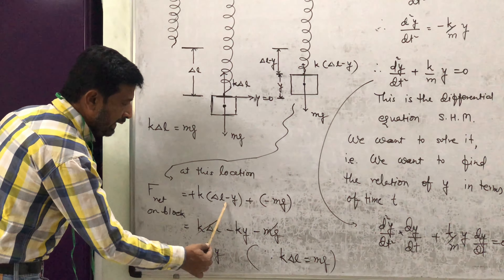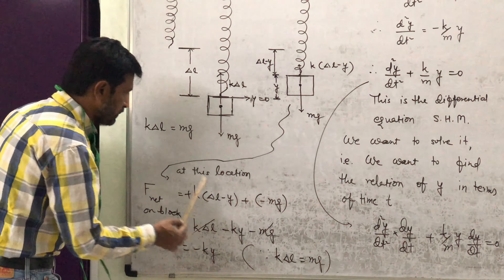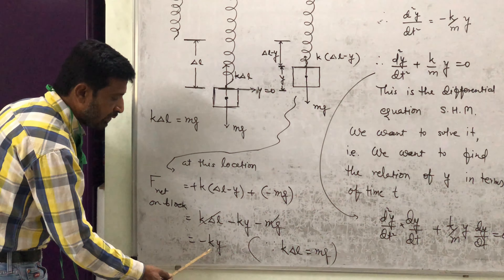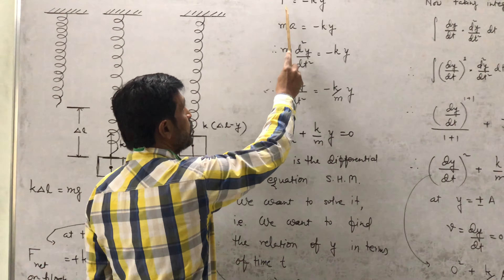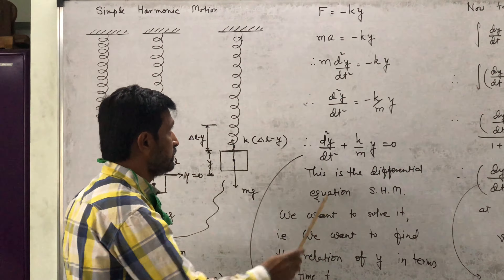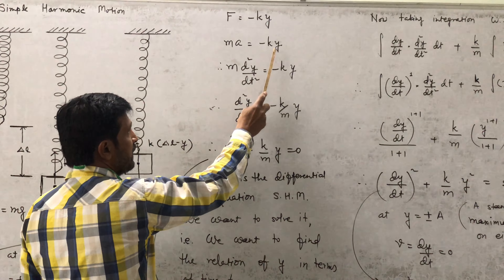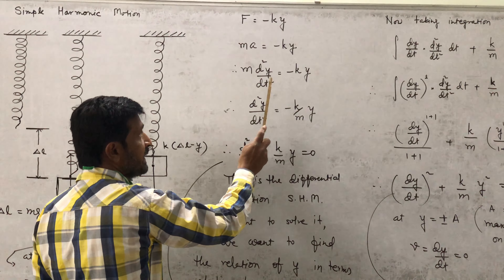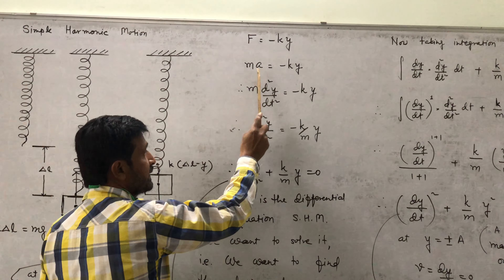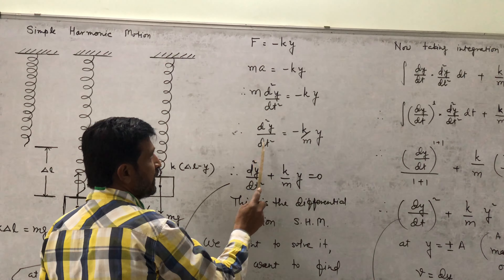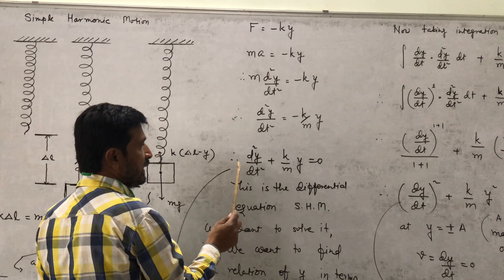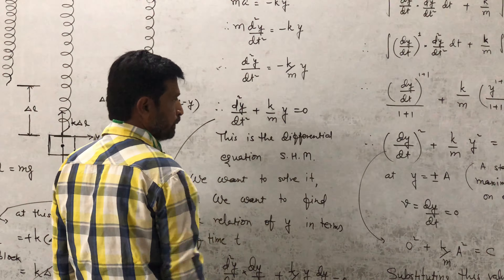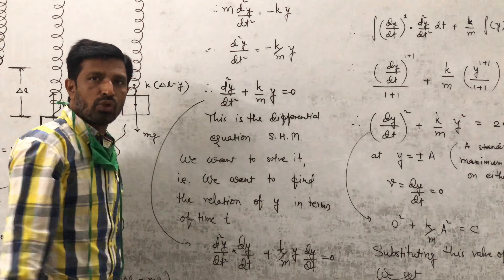Opening the bracket: k·δl − k·y − mg. But k·δl = mg, so these two terms cancel out. Finally, the net force is F = −ky. We know F = ma, so m·(d²y/dt²) = −ky. Therefore d²y/dt² = −(k/m)·y, which gives d²y/dt² + (k/m)·y = 0. This is the differential equation of SHM.